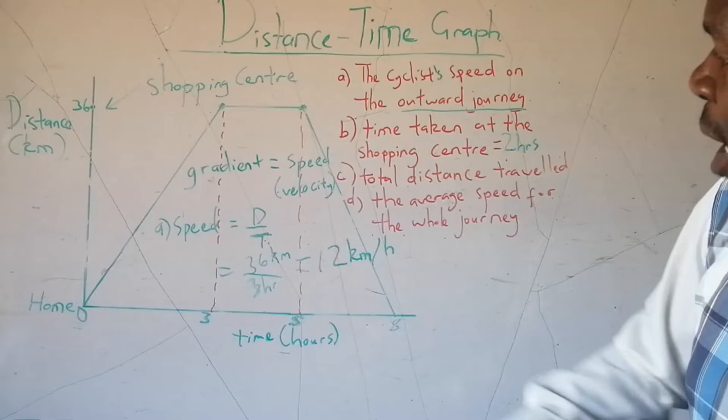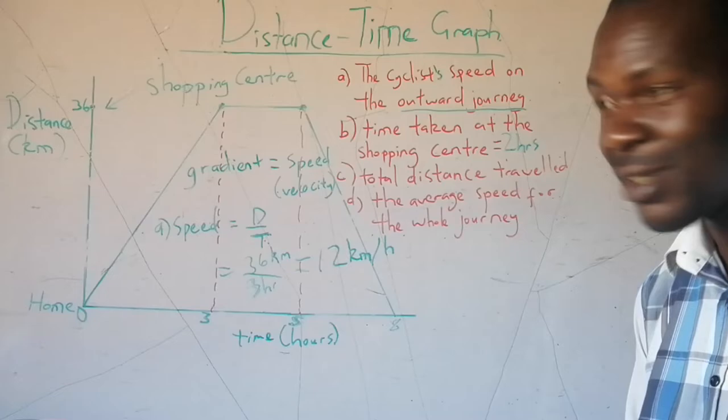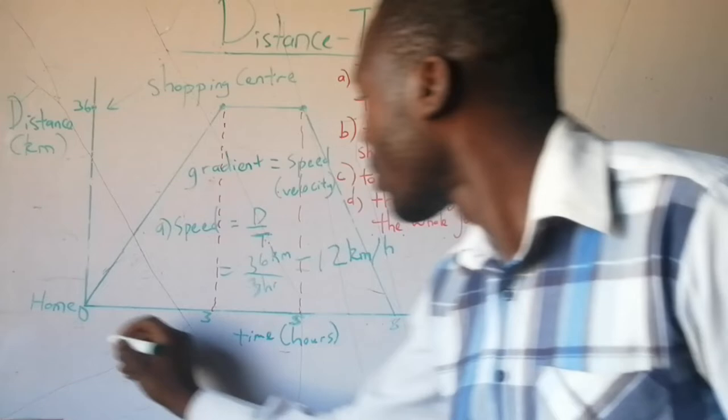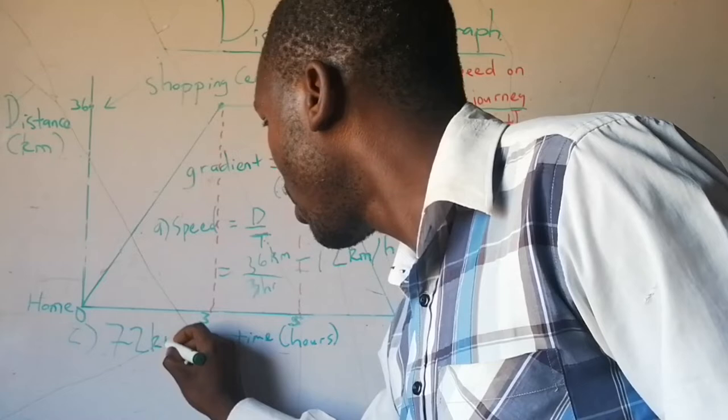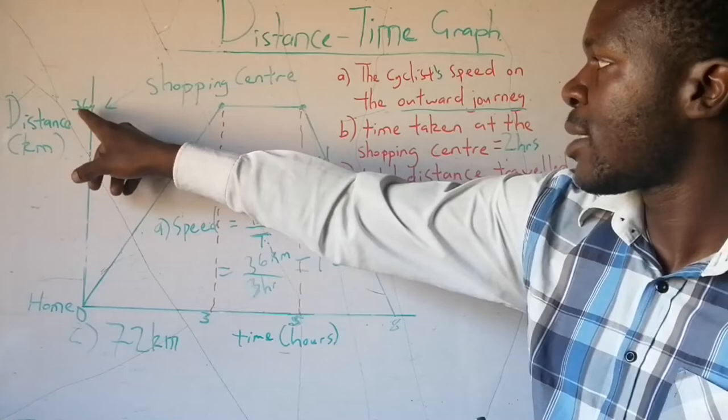For part C, total distance traveled. The cyclist traveled 36 kilometers to the shopping center and 36 kilometers from the shopping center back home. So the total distance traveled is 36 plus 36, which equals 72 kilometers.